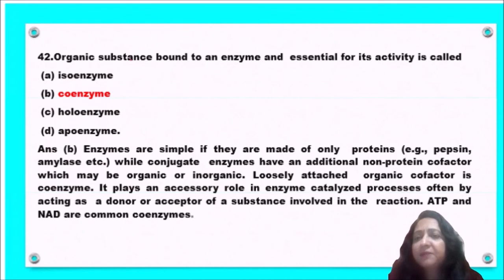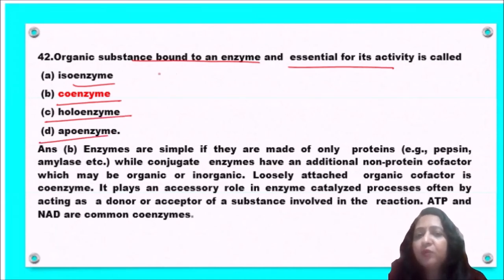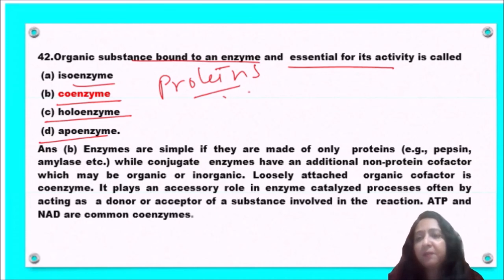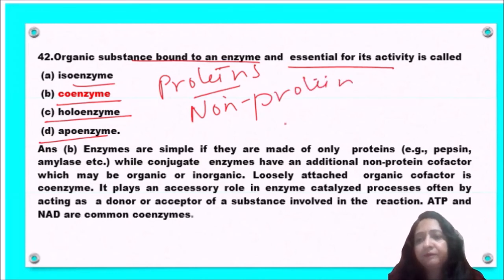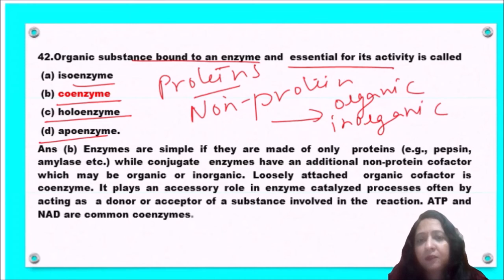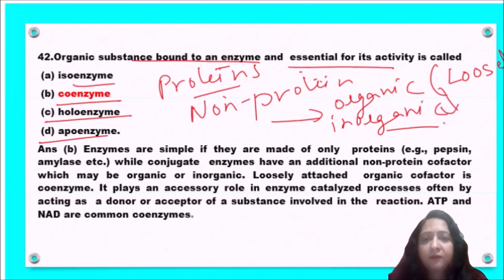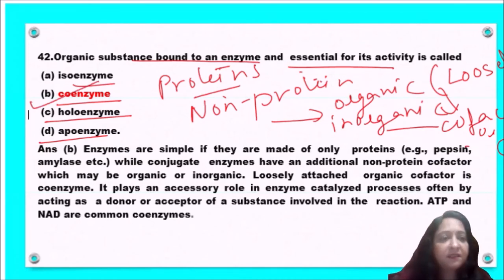Next question: an organic substance bound to an enzyme and essential for its activity is called an isozyme, coenzyme, holoenzyme, or apoenzyme? Simple enzymes like pepsin and amylase are made of proteins alone, while conjugate enzymes have an additional non-protein factor that may be organic or inorganic. A loosely attached organic factor is known as a coenzyme. So option B, coenzyme, is the correct answer.